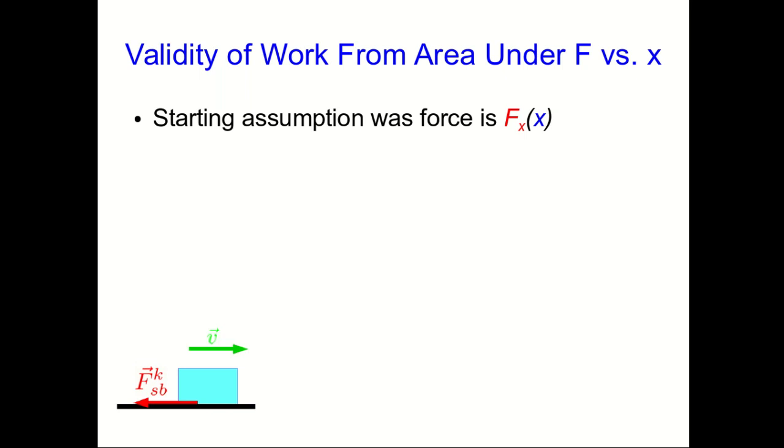So we've seen that work can be calculated from an area under a force versus position graph. But when is that valid? Our starting assumption was that the force had to be position dependent only. That turns out to be valid for non-dissipative forces, and we can argue it from reversibility. If we reverse the velocities, that's just like reversing time. And by reversibility, the forces shouldn't change. So the forces must not be velocity dependent.